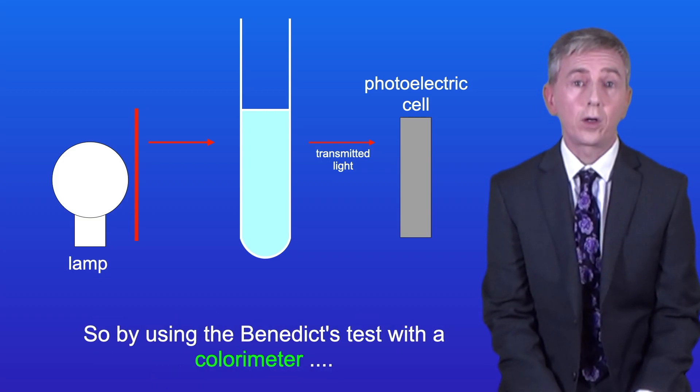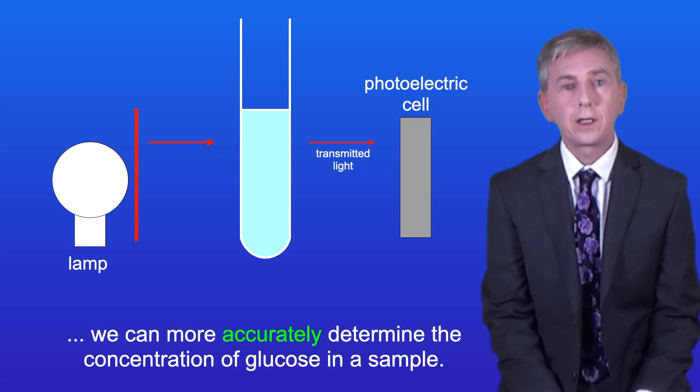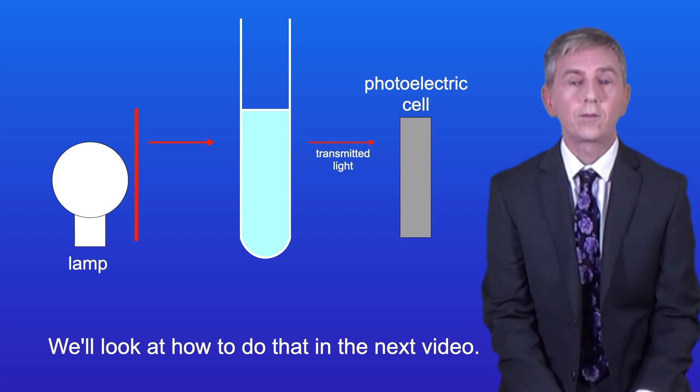So by using the Benedict's test with a colorimeter, we can more accurately determine the concentration of glucose in a sample. And we look at how to do that in the next video.